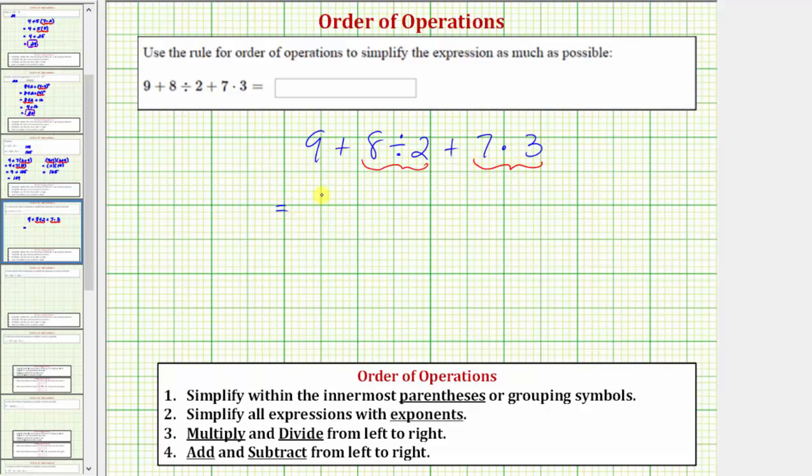So simplifying we have nine plus eight divided by two is equal to four and then we have plus seven times three is equal to twenty-one.